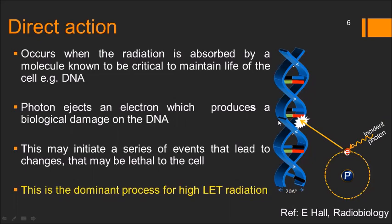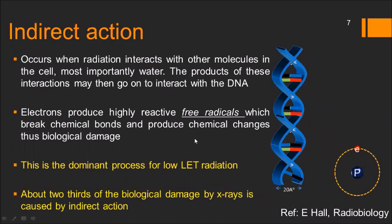Indirect action occurs when radiation interacts with other molecules in the cell, most importantly water. The product of this interaction may then go and interact with the DNA. An incident photon hits and ejects an electron, which interacts with the water molecule and produces an OH radical — the free radical — which goes and interacts with the DNA and damages it. This is called indirect action.